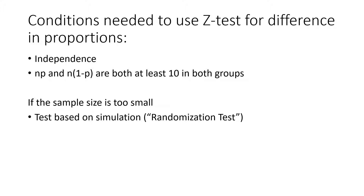If you remember, the conditions needed to use a z-test for difference in proportions are that we need independence both between the individuals and between the groups. And then we need to check and make sure that n times p and n times 1 minus p are both at least 10 in both groups.